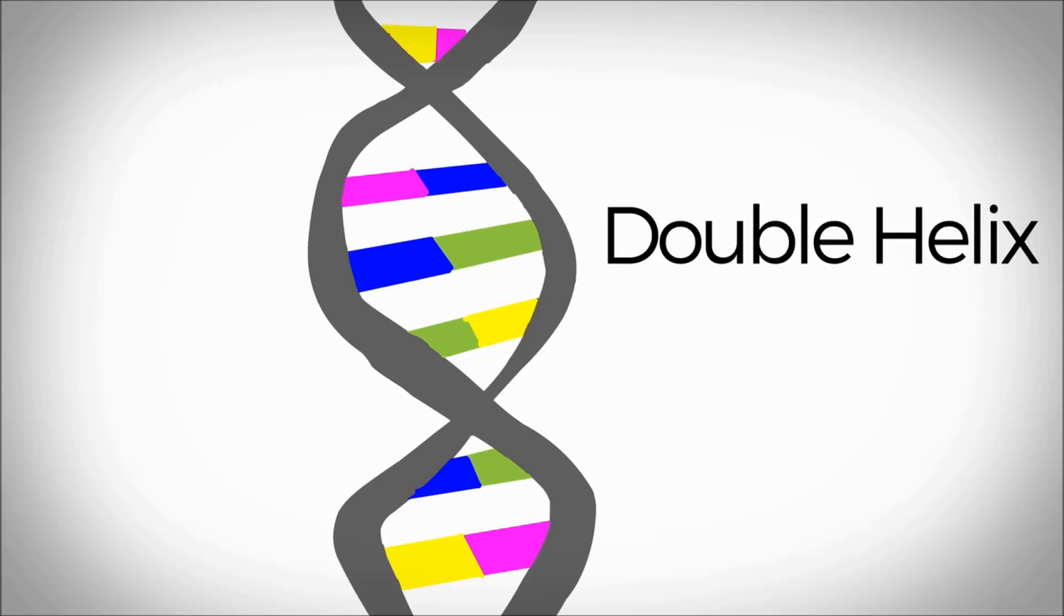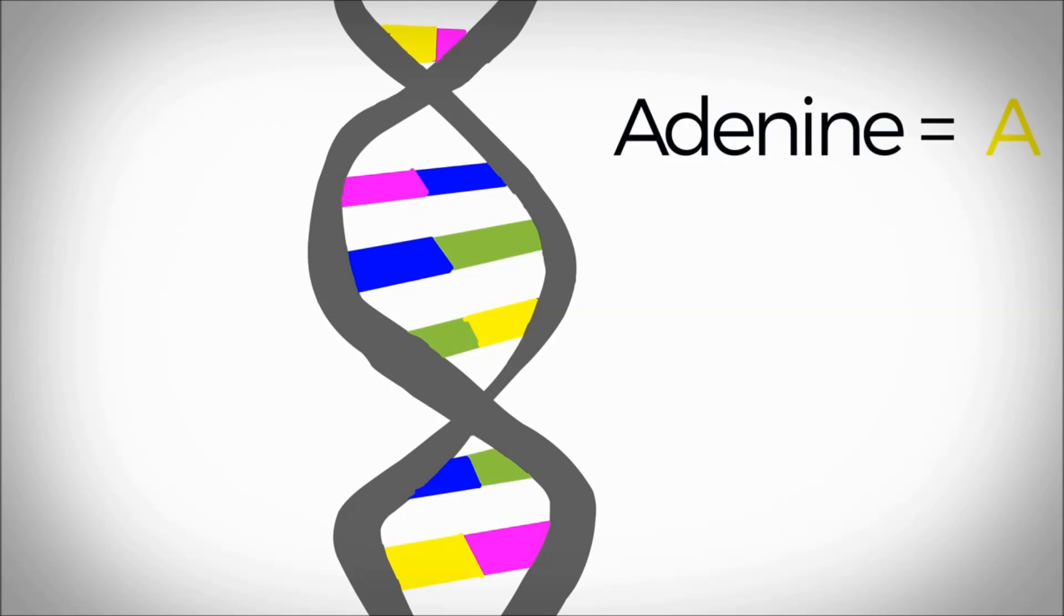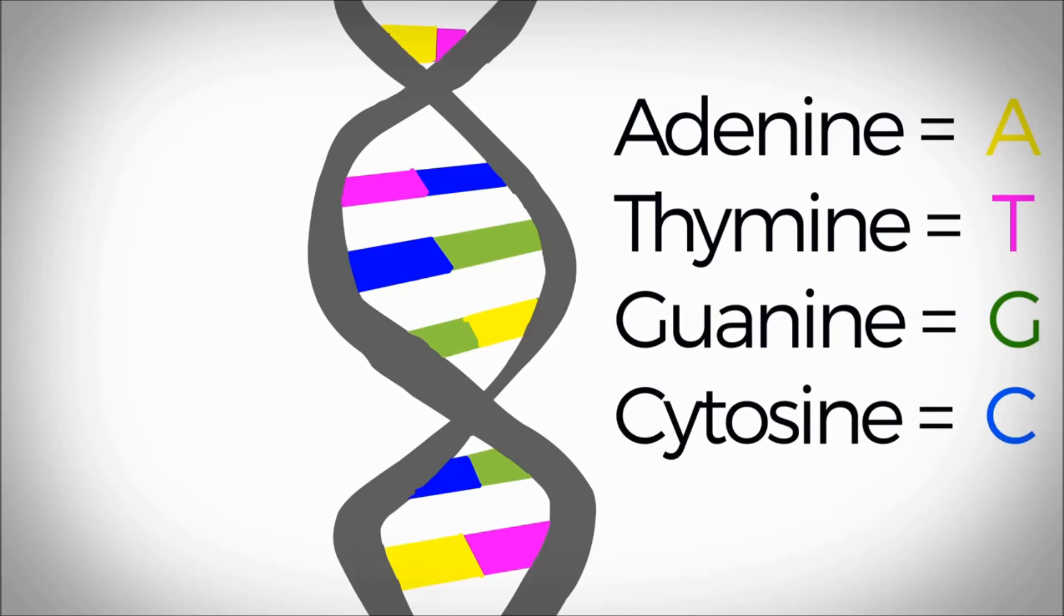The steps of the ladder are made of four bases. Adenine is A, thymine is T, guanine is G, and cytosine is C.